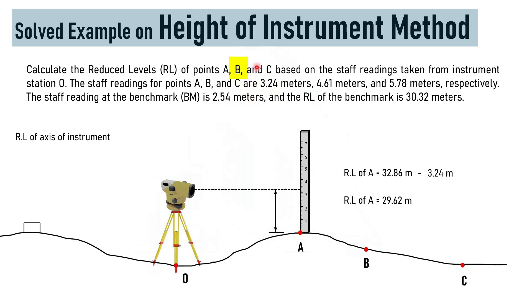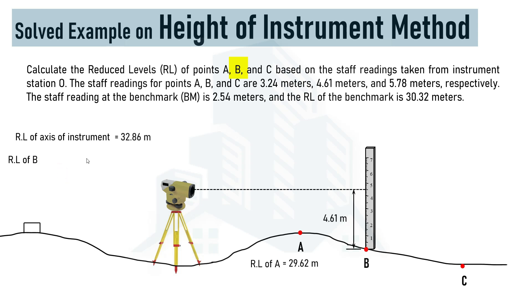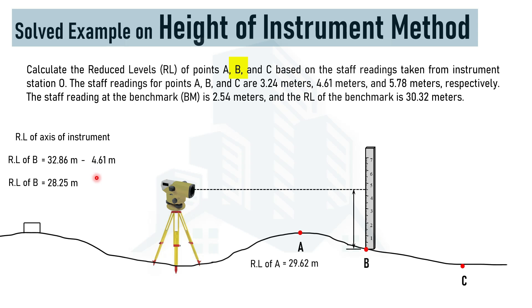For the reduced level at point B, we shift the staff to point B. The staff reading at point B is 4.61 meters. Using the same approach, we subtract the staff reading from the reduced level of the axis of the instrument: 32.86 − 4.61 = 28.25 meters, which is the reduced level at point B.